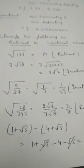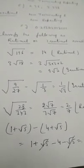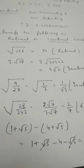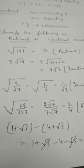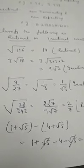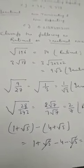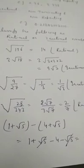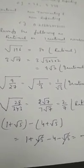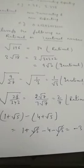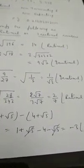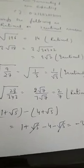Next one, root 28 divided by 343. If we solve root 28 by factorization, it becomes 2 root 7. So, root 343 becomes 7 root 7. Root 7 cancelled from numerator and denominator and we are left with 2 by 7 that is rational.